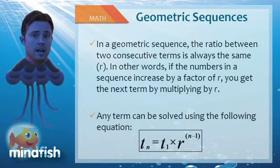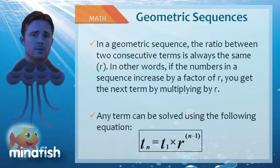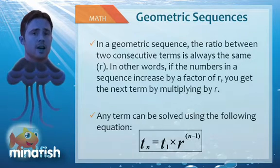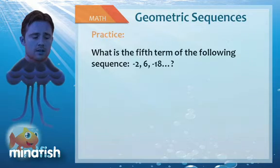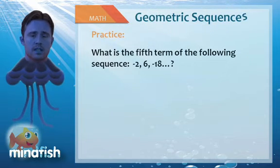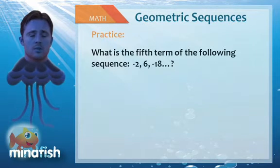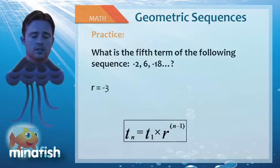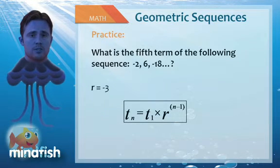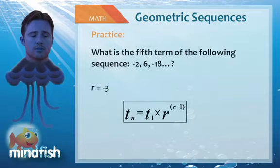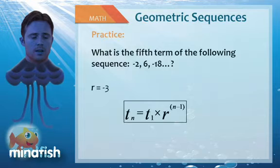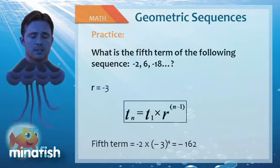For example, in the sequence I gave you 2, 4, 8, if you wanted the tenth term, it would be 2 times the ratio, which is 2, raised to the ninth, not to the tenth. So in this one, what is the fifth term of the following sequence: negative 2, 6, negative 18? What are we multiplying by each time? The ratio is negative 3. So it's going to be negative 2 times negative 3 raised to the fourth power. So negative 2 times negative 3 raised to the fourth power is going to be negative 162.